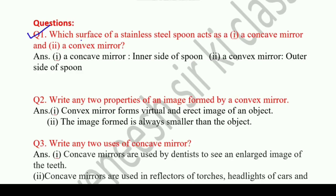Question 1: Which surface of a stainless steel spoon acts as a concave mirror and which as a convex mirror? Answer: The inner side of the spoon acts as a concave mirror, and the outer side of the spoon acts as a convex mirror.